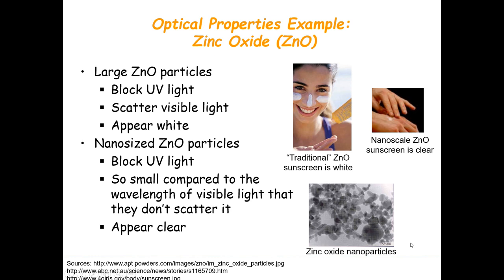One very practical example of optical property is Zinc Oxide. If you have a large number of Zinc Oxide particles, ZnO blocks ultraviolet light. That is why it is mostly used in cosmetics — people use it particularly to block ultraviolet light. It scatters visible light, which makes it appear fair/white, and that is why it is used in cosmetics for that particular purpose.